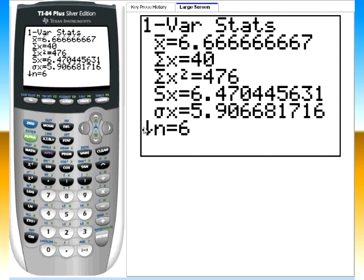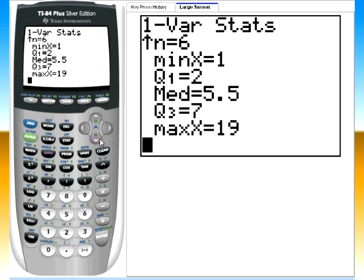Notice a little arrow here. I can scroll down. We got our minimum value, the first quartile, the median, third quartile, and the maximum value. In this case, what I'm interested in is the median right here, 5.5. So I know my median now is 5.5.